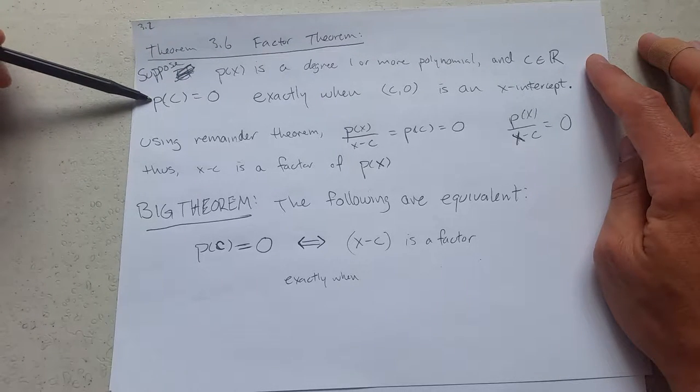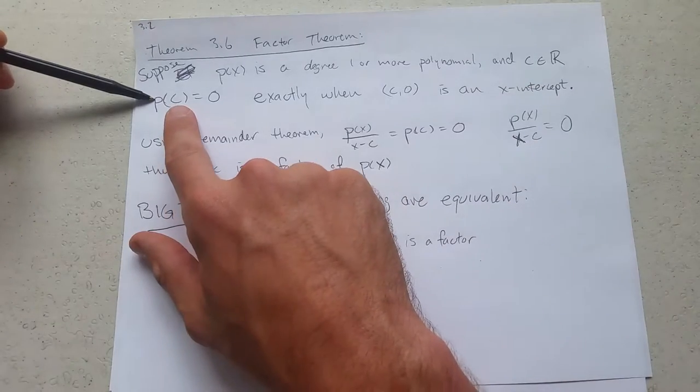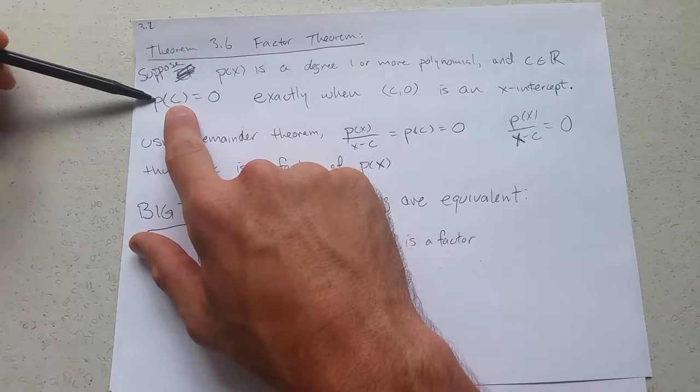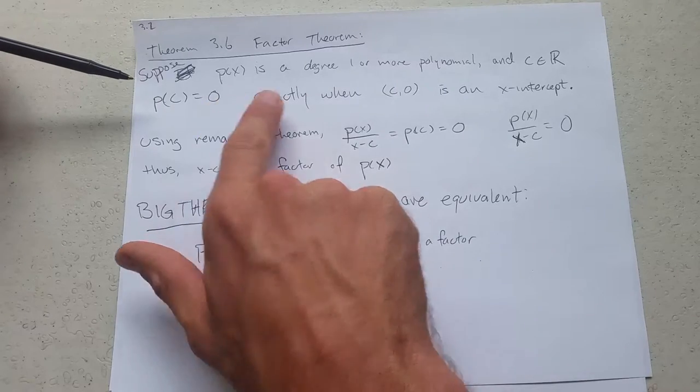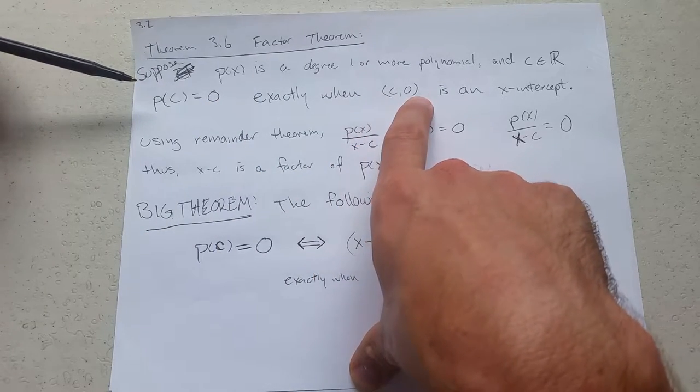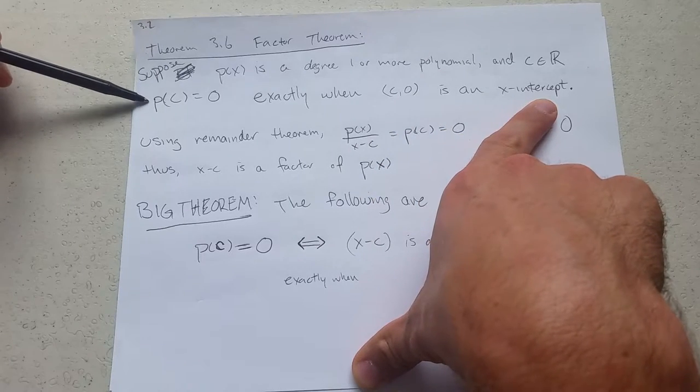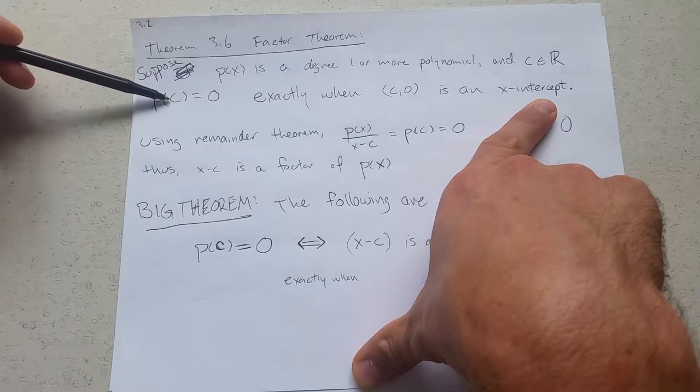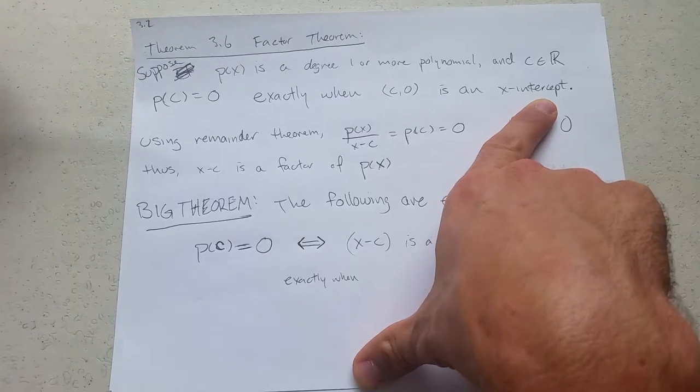If p of c equals zero, what that means is when you plug in c for x and you get out a y value of zero, that happens exactly when c comma zero, so x value c, y value zero, is an x-intercept. This is basically a definition of an x-intercept. When x is this value and y is zero, you have an x-intercept.